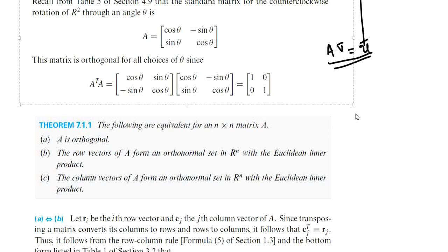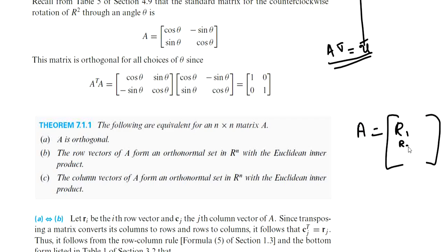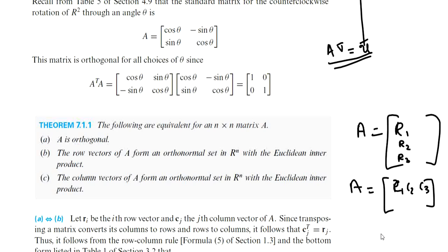Suppose we write a 3 by 3 matrix with 3 rows R1, R2, R3. Then R1, R2, R3 form an orthonormal basis for R3 — that is statement B. Similarly, if we express the same matrix A in terms of its columns C1, C2, C3, then the set C1, C2, C3 will be an orthonormal basis for R3 — that is statement C.